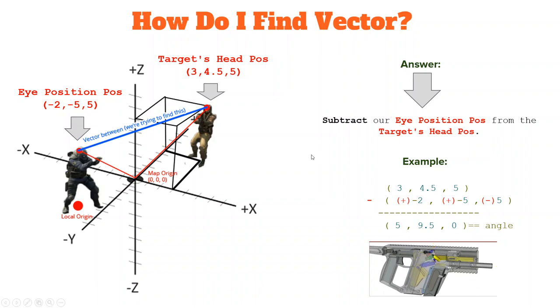So we would subtract these two ordered pairs here. We would take our target's head position, which is (3, 4.5, 5), minus (-2, -5, 5).